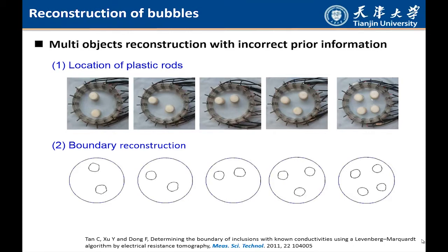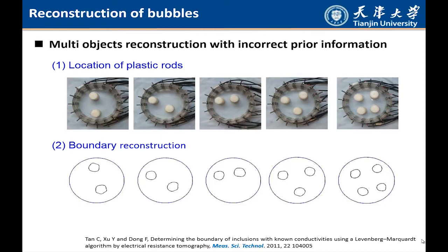This method can be applied in multi-phase flow measurement and reconstruction. Here is an example of using this method to reconstruct different objects — there are more than one object inside the sensing field. You can see you can separate up to four objects just by reconstructing the boundary of the objects. This system has been extensively tested on a facility — a multi-phase flow loop at Tianjin University — for oil, gas, and water three-phase flow measurement.